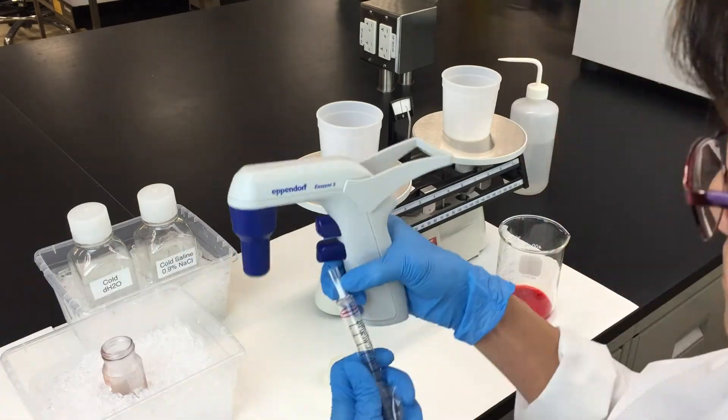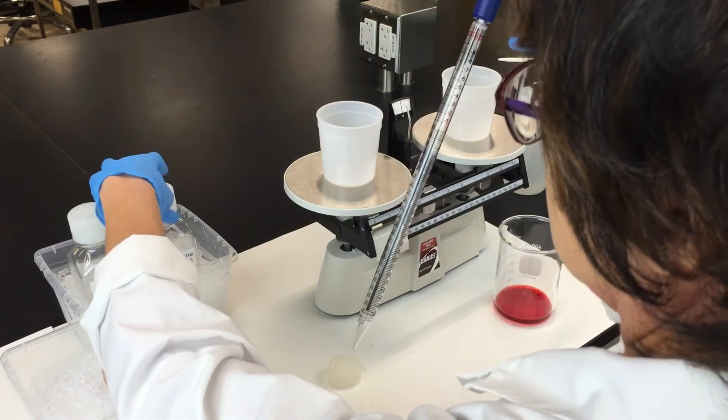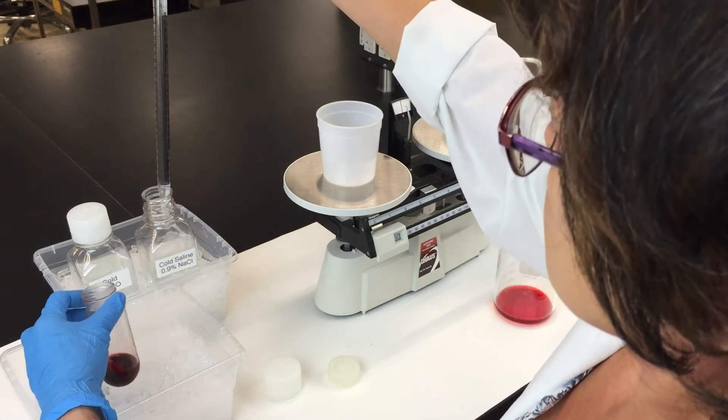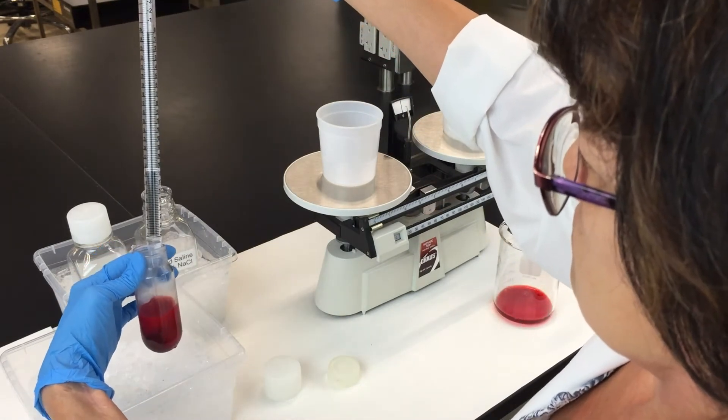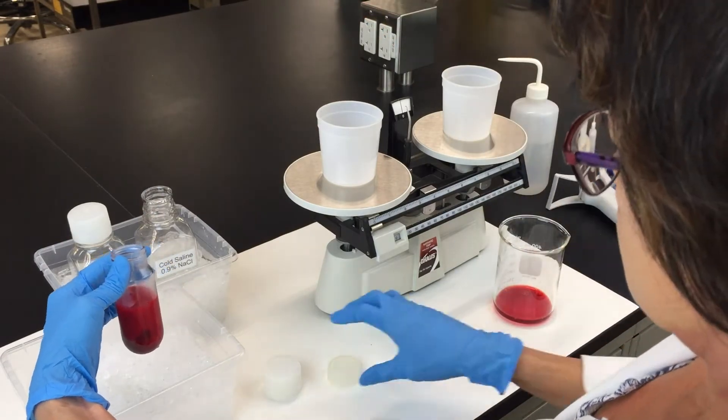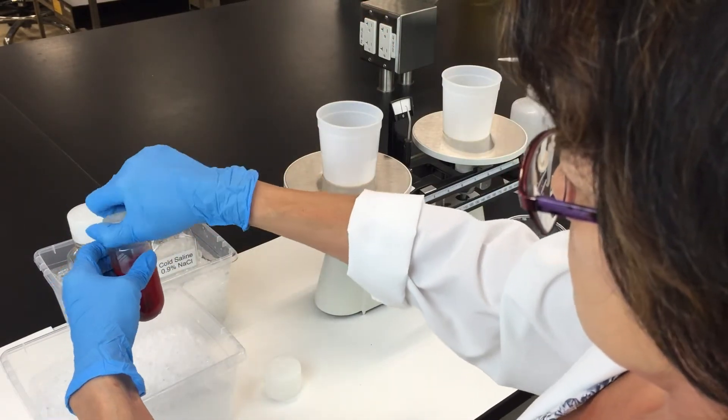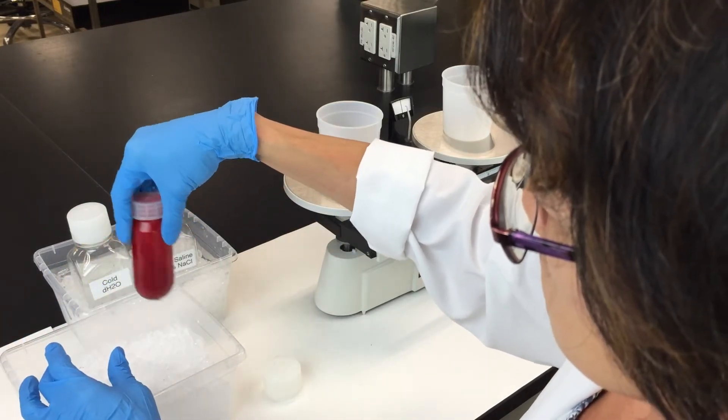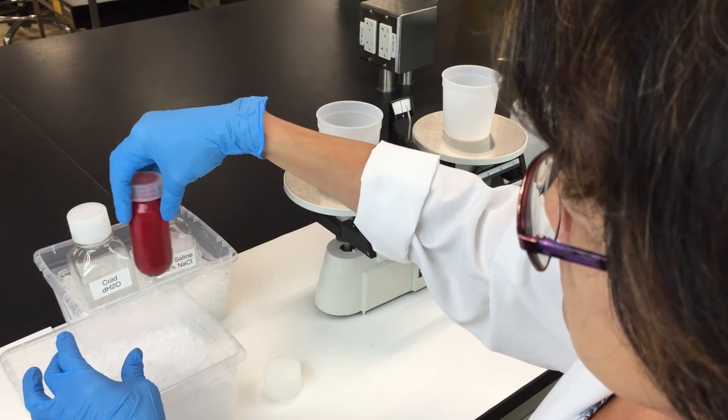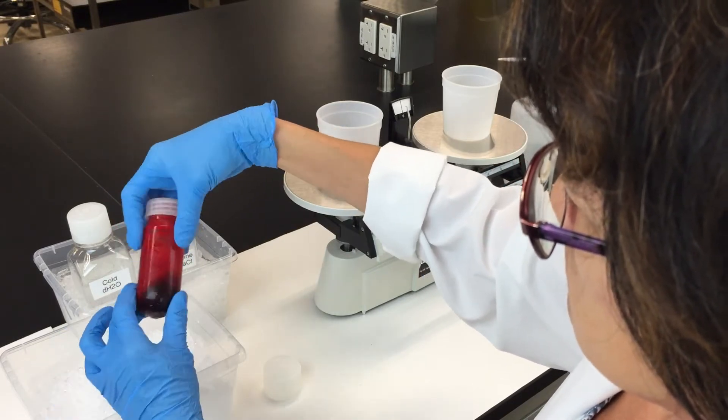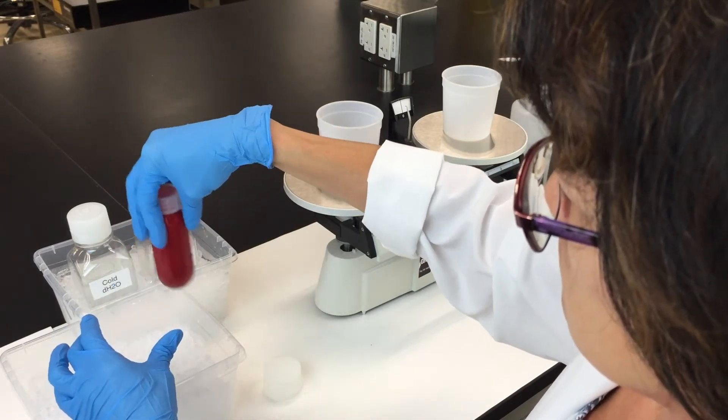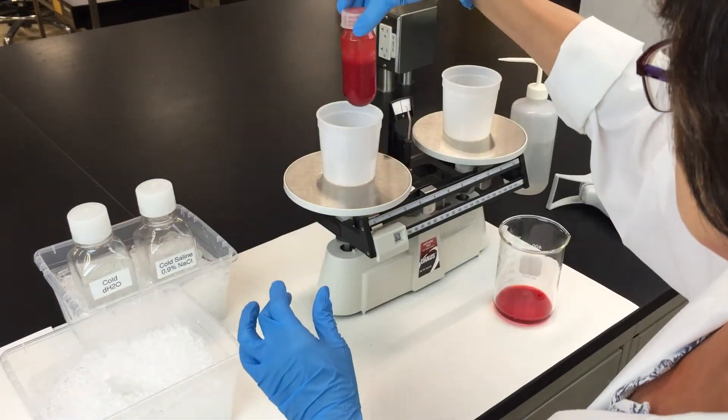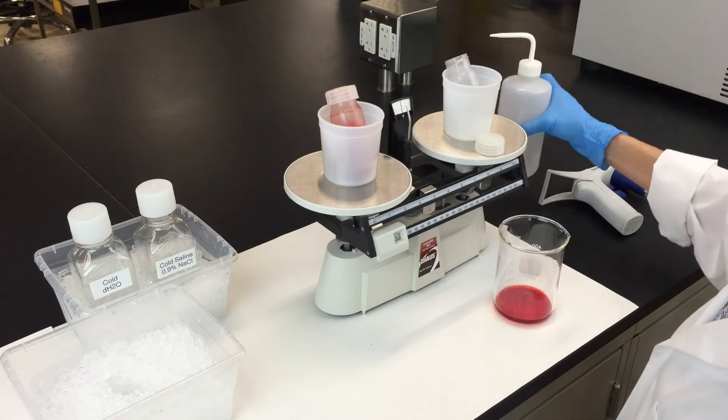Next, add 30 ml of cold saline to wash the red blood cells. Now swirl the tube gently to re-suspend the red blood cells. Balance the tubes and do a second spin in the centrifuge.